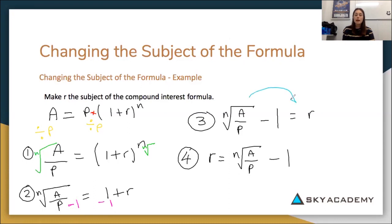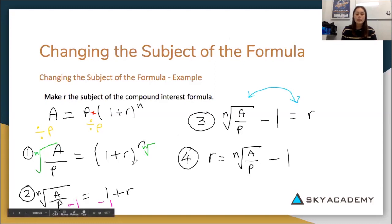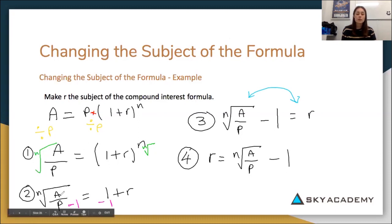We slowly worked through three steps to get R by itself: first we divided by P, then we took the nth root, then we subtracted 1, and finally we flipped it around so that R was on the left-hand side with the rest of the equation on the right.